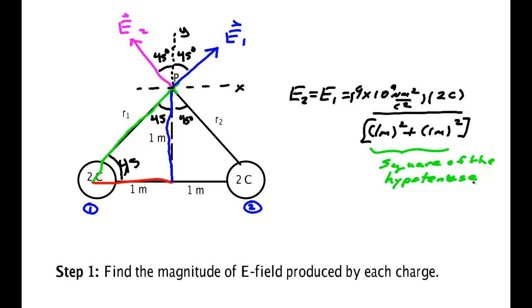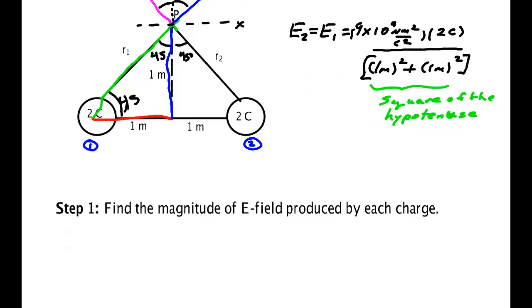And so the magnitude, all of which could be going down into here, the magnitude of E1 equals E2 is 9 times 10 to the 9th newton per coulomb. And the meters here cancel that meter squared, and that coulomb cancels one of those coulombs. Alright, so now we have the magnitude.